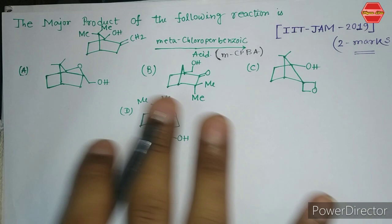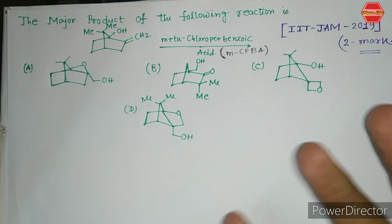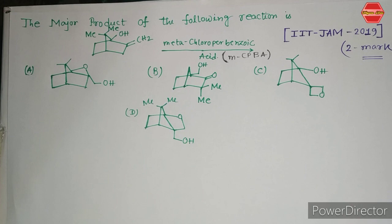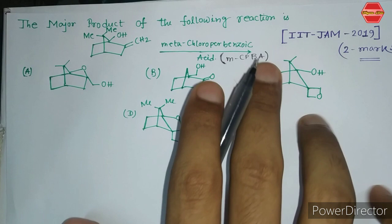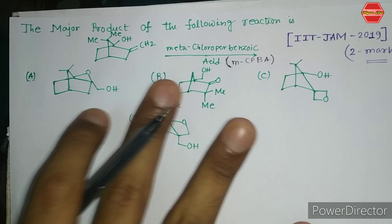I'll show you how the mechanism of this reaction proceeds. First, you need to know the role of metachloroparbenzoic acid. MCPBA is a very electrophilic reagent, and it forms an epoxide. The important point is that MCPBA forms an epoxide from an alkene.